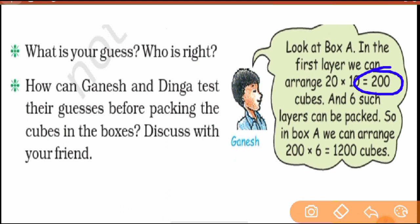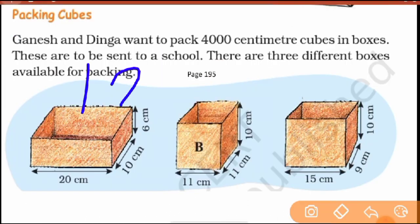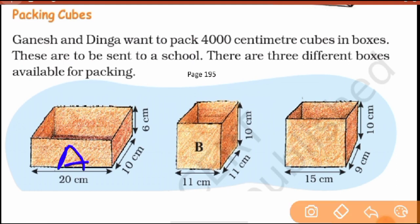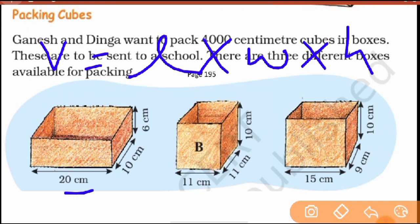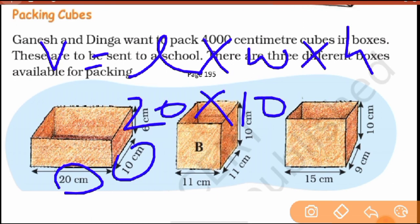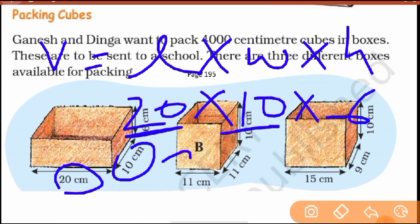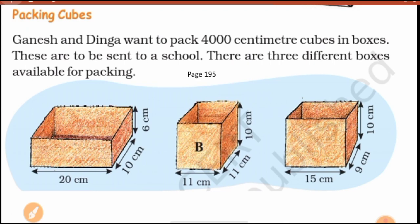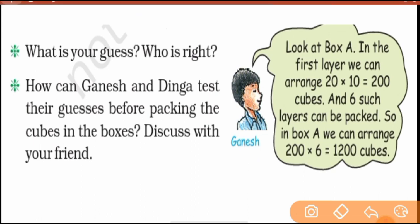First layer has 200 cubes, second layer also 200, up to six layers total. So total cubes in Box A = 200 × 6 = 1200 cubes, meaning 1200 cubic centimeters is the volume of Box A. We can verify with the formula: V = l×w×h = 20×10×6 = 1200 cubic centimeters.